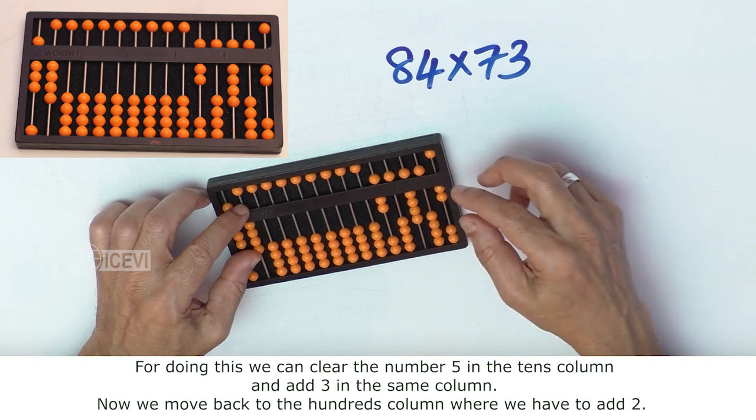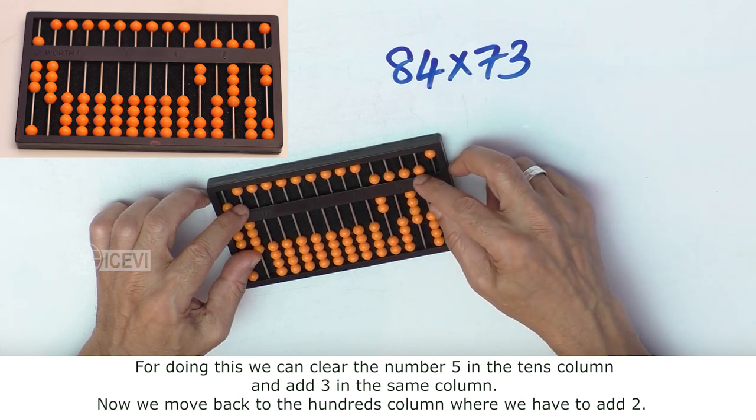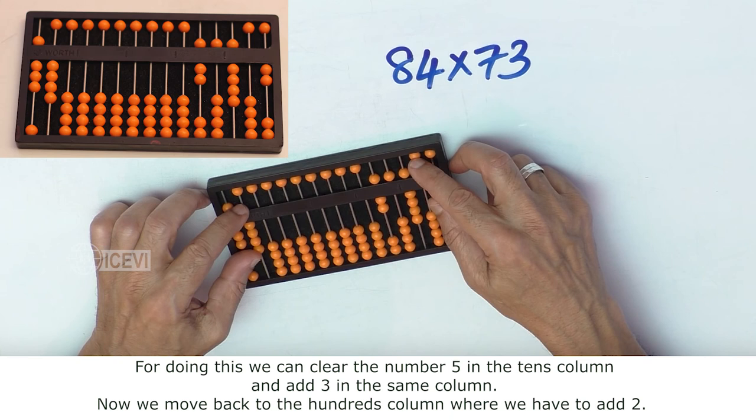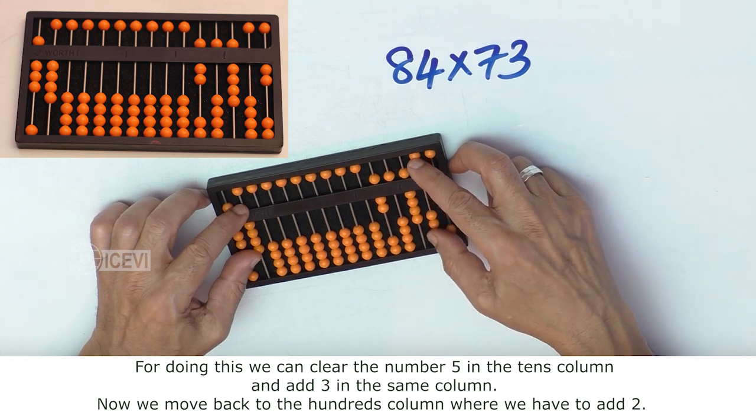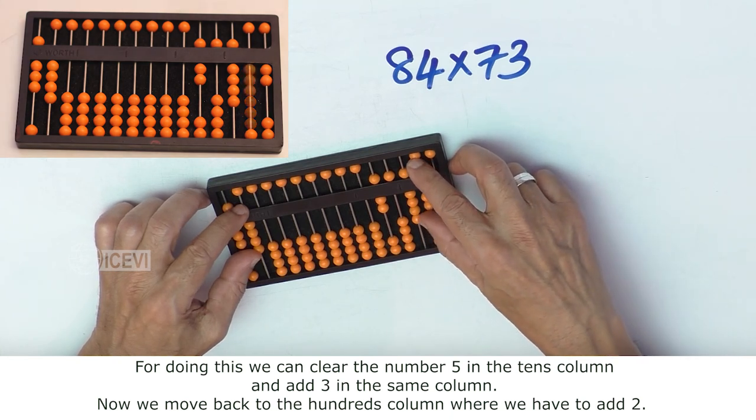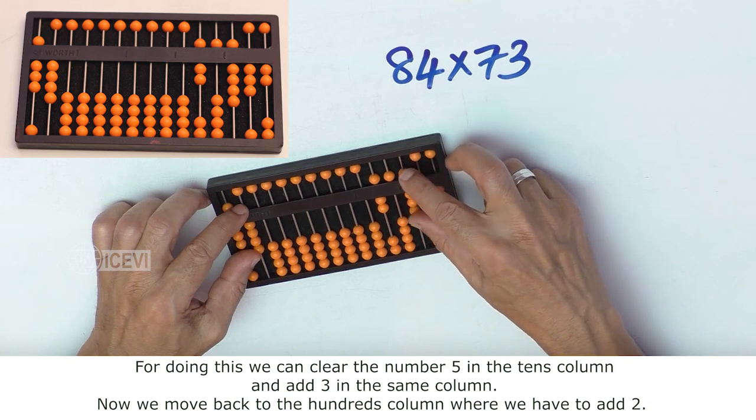For doing this we can clear the number 5 in the 10th column and add 3 in the same column. Now we move back to the 100th column.